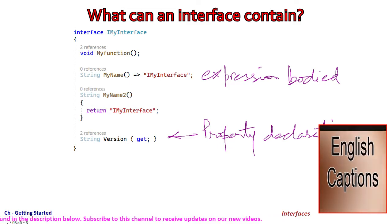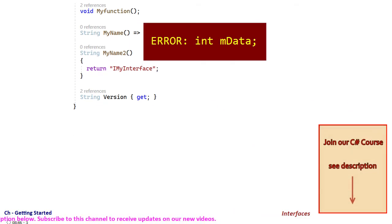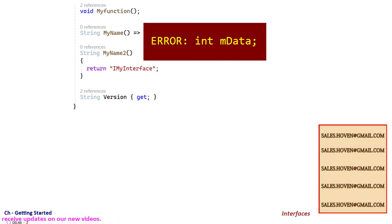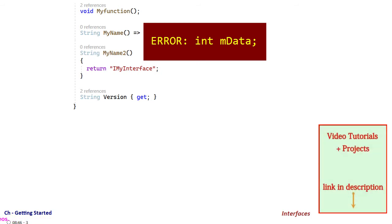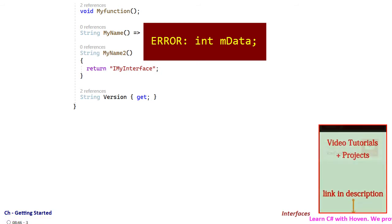As already explained, an interface cannot contain instance data members. We shall get a compiler error if we try to add a member called int mData. This is an important difference between an abstract class and an interface.